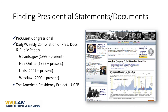Presidential documents are available in all the usual places: ProQuest Congressional, GovInfo, HeinOnline, Lexis, and Westlaw. There's one final source for presidential documents I'd like to recommend, and that's the American Presidency Project, hosted by UC Santa Barbara. It takes all of the publicly available presidential documents, adds some context and color, and includes things like FDR's fireside chats, for example.